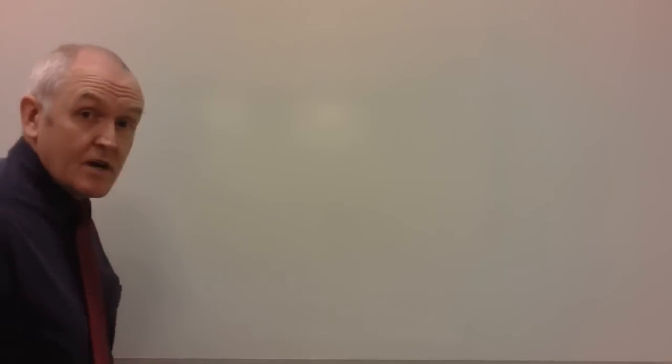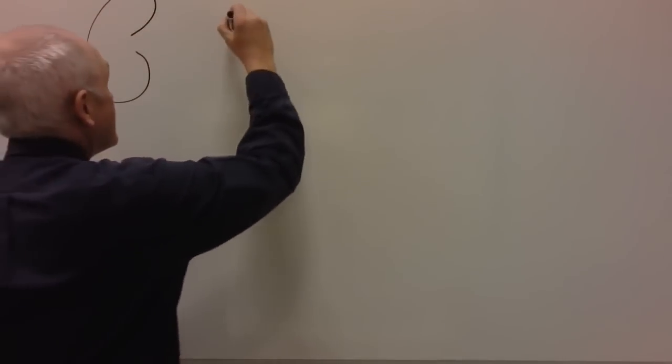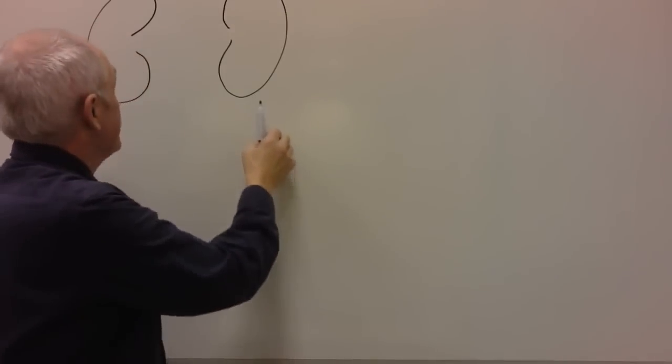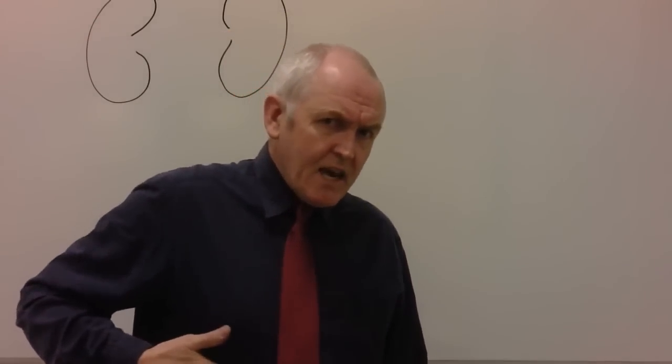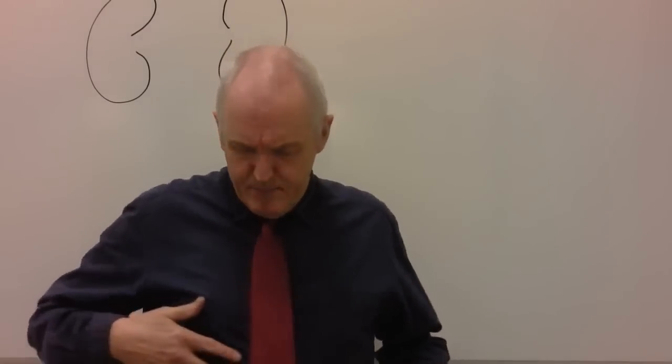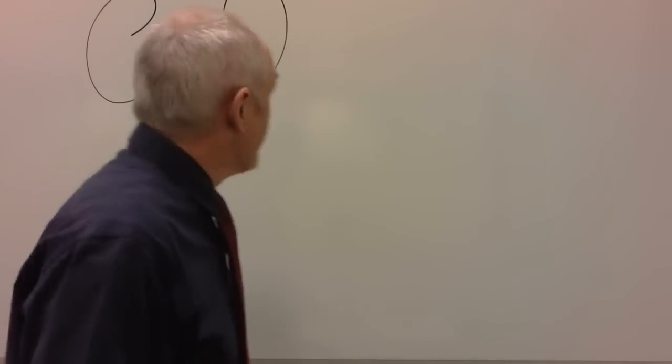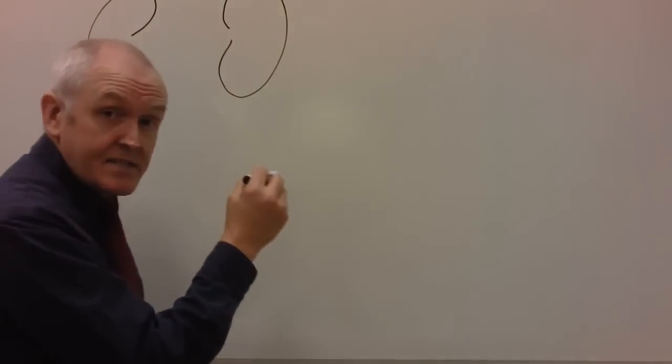Welcome to this talk on the urinary system. Let's start by thinking about the main components of the urinary system. We're going to start off with two kidneys — the right kidney and the left kidney. In anatomy, the right kidney is slightly lower than the left kidney because of the liver, which is quite a bulky organ.